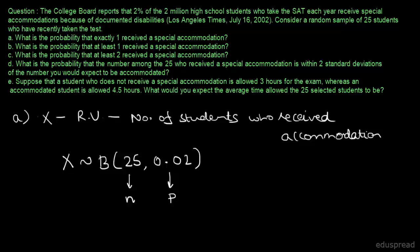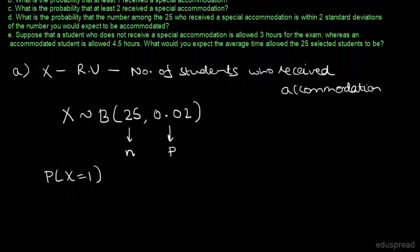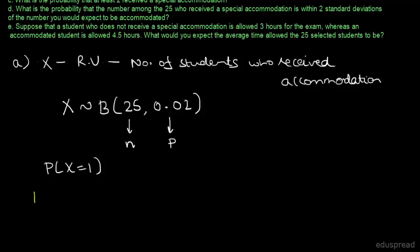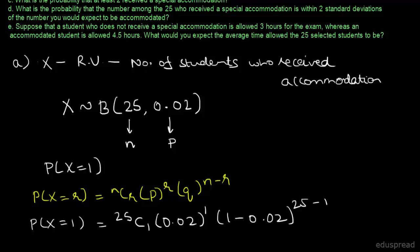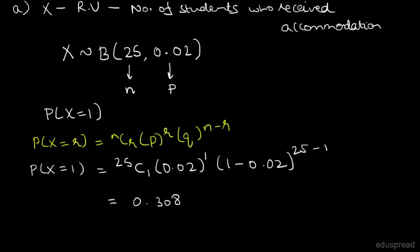In part A, we have to find the probability that exactly 1 received a special accommodation, so we need P(X=1). Using the binomial formula, P(X=1) equals 25C1 times 0.02 raised to the power 1 times 0.98 raised to the power 24. Solving this expression, we get 0.308. So the probability that exactly one student received the special accommodation is 0.308.